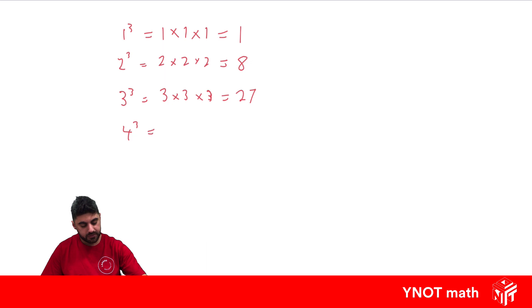4 cubed, 4 times 4 times 4, which we get 4 times 4 is 16, times 4 is 64. And 5 cubed means 5 times 5 times 5. 5 times 5 is 25, and 25 times 5 is 125. So these numbers get pretty big, pretty quick. And obviously there's an infinite amount of them. And these are our perfect cube numbers.